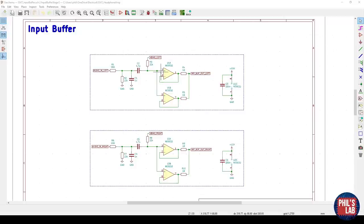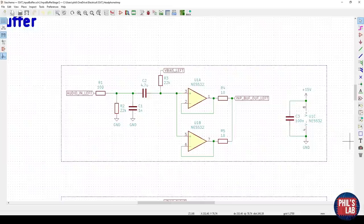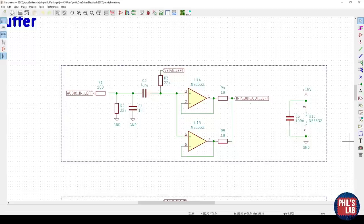Now here we have the input buffer section. Again we have the left channel up here and the right channel down here, so let's look at one of them. The input buffer provides a fairly high impedance to the source, for example your MP3 player, which is connected to the input of the headphone amplifier and prevents any loading effects for the following volume control stage. R1 and C1 form a low pass filter preventing any RF from getting into the system and being audibly demodulated at a later stage.